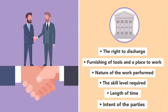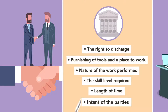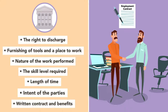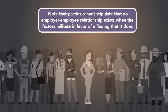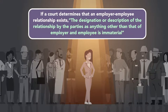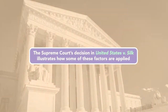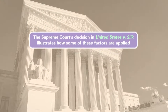The intent of the parties: courts will consider whether the parties believe they're entering into an employer-employee relationship. Written contract and benefits: if the worker signs a written employment contract and receives benefits such as health and retirement, he is more likely to be deemed an employee. Note that parties cannot stipulate that no employer-employee relationship exists when the factors militate in favor of a finding that it does. The Supreme Court's decision in United States v. Silk illustrates how some of these factors are applied.